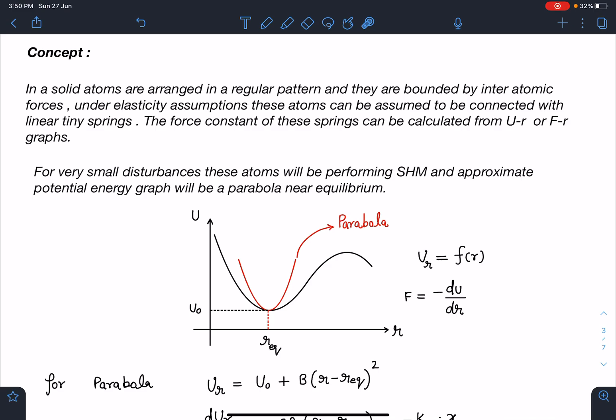Here I am going to give you another idea. For very small disturbances, these atoms will be performing SHM because we are assuming they are linear springs. So their motion can be assumed that when we are deforming them from equilibrium by a small distance, they will be performing SHM.